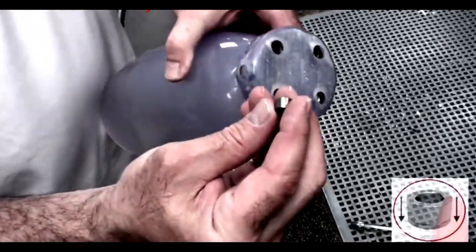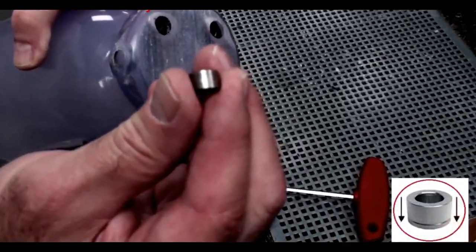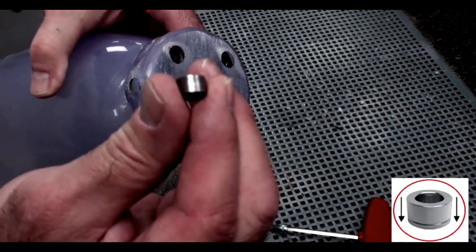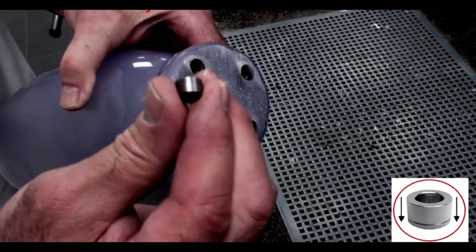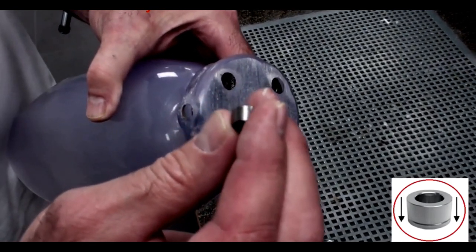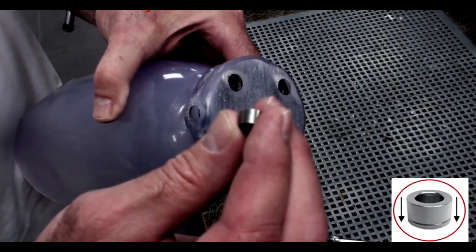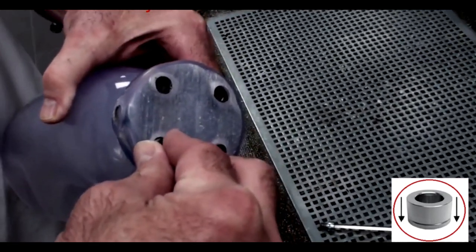Next you'll insert the snap bushings. Notice the ring. You'll apply a silicone bonding agent. The snap bushings are slightly conical, so the slight ring that you see on one end needs to be inserted first. Like this.